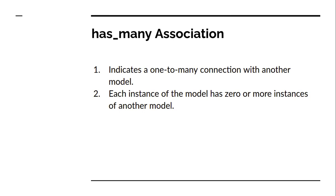has_many is always used inside the model which is treated as the parent model. The other model, which can be considered the child model, must have belongs_to macro defined in it. This has_many and belongs_to combination forms a one-to-many relationship between two models.